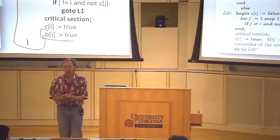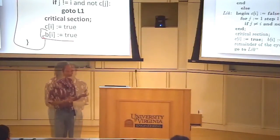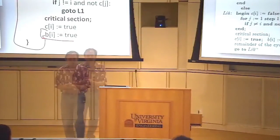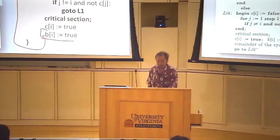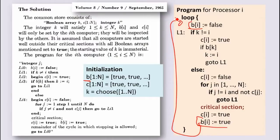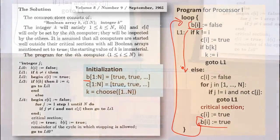The B array just means, does this process have something it wants to do? I'm not sure why B was chosen for it. Maybe it stands for something in Dutch. But it's just, if the B value is false, it means this processor wants to do something. If the B value is true, it means this processor has no work to do. So the B array is not that important.